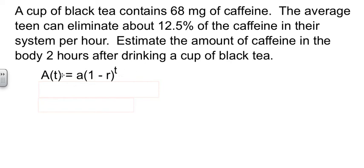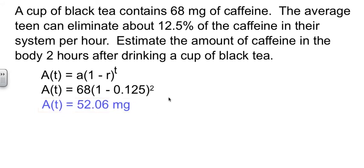I went ahead and put the decay equation because we're eliminating, so we're getting smaller the amount that we have. Where are we starting at? Our original value is 68 milligrams. Our r is 12.5% and our t is two hours. So I'm going to plug those values in and punch this into my calculator. It tells me that after two hours, the average teenager would have just over 52 milligrams left in their body.